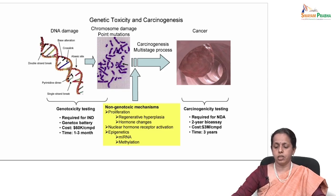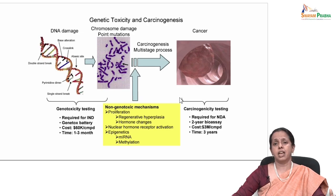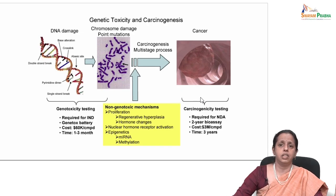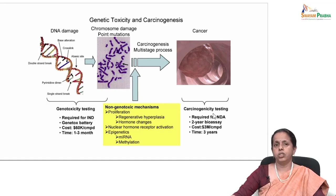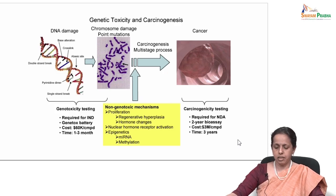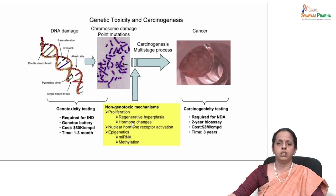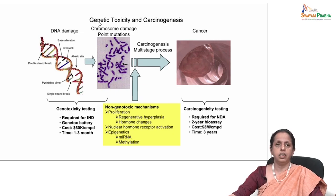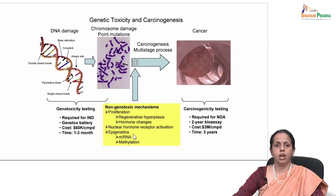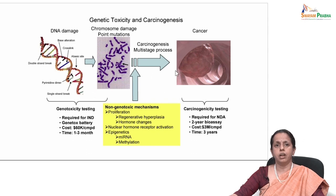Some transgenic mouse models such as p53+/- and Hras transgenic mice have been recently evaluated and considered as alternatives. You test the carcinogen in these transgenic models and look for the outcome of the disease. The potential of these chemicals to induce tumors — that is carcinogenicity in animals — and whether you can extrapolate to humans is debatable but generally requires more than two to three years. Because of the mechanistic association of DNA damage and cancer, the genotoxicity assays are very vital. Non-genotoxic mechanisms like proliferation changes, hormone changes, and nuclear hormone receptor activation can also cause a multi-stage process.